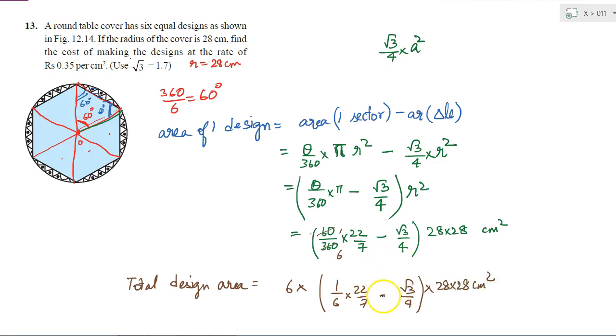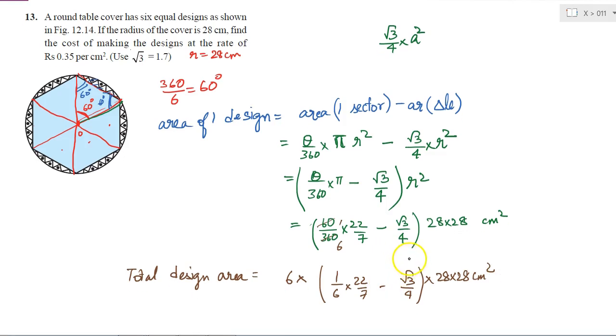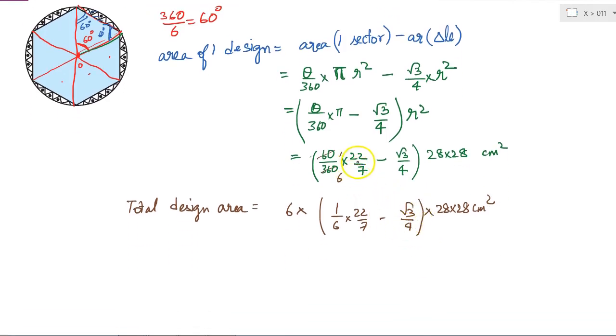So if I expand it, actually I did not have to take r² common, this would be easier. So if I expand it again back, I will get 6 into 1 by 6 into 22 by 7 into 28 into 28 minus 6√3 by 4 into 28 into 28.